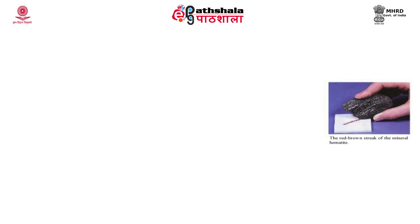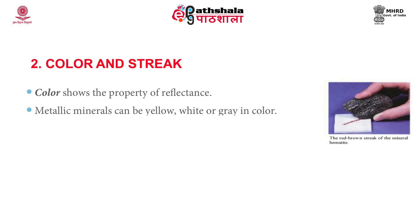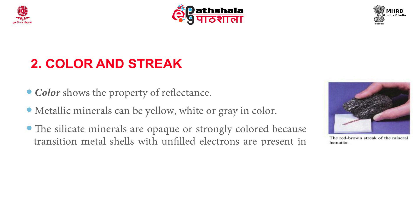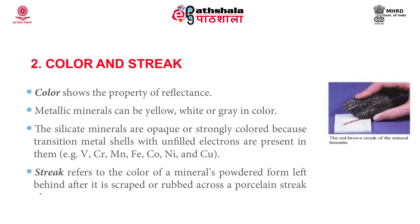The second property is colour and streak. Colour shows the property of reflectance. Metallic minerals can be yellow, white or grey in colour. Silicate minerals are opaque or strongly coloured because transition metal shells with unfilled electrons are present in them, for example vanadium, chromium, manganese, iron, cobalt, nickel and copper. Streak refers to the colour of a mineral's powdered form left behind after it is scraped or rubbed across a porcelain streak plate.